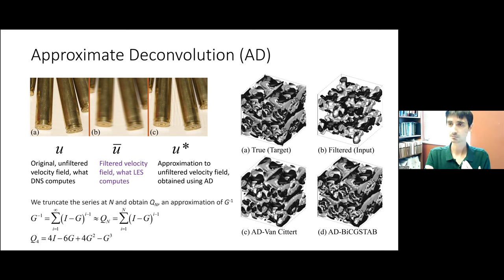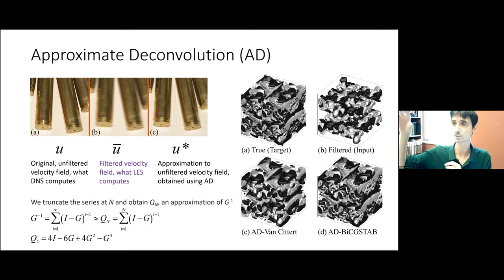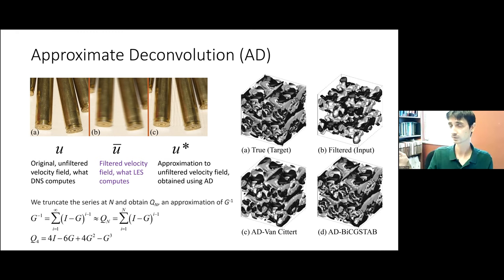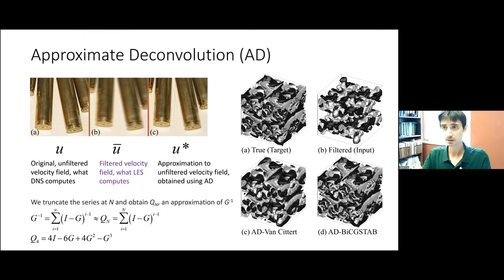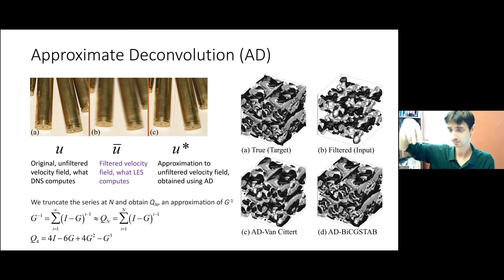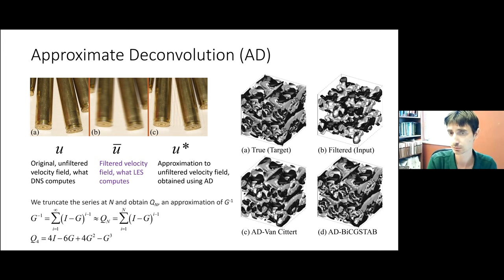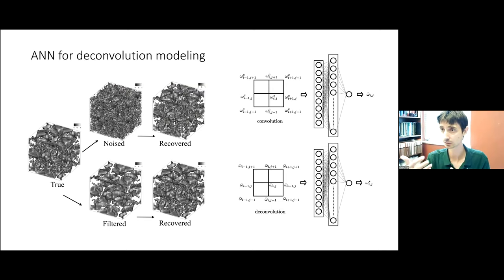I kind of thought: to recover the field from the filtered field, you need this G operator — a filtering operator. Without knowing what G is for the underlying dynamics and flows, I cannot really convert it back. So I asked: can I learn that filter through data? Can I use neural networks or machine learning tools to learn a filter? That was our first example in this modeling framework. We used neural networks: we performed DNS, coarse-grained the data to get the filtered solution, and then asked the neural network: can you recover back to the true solutions?